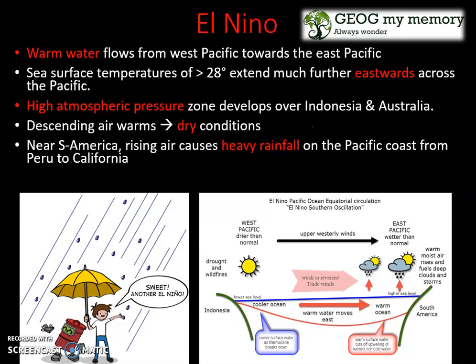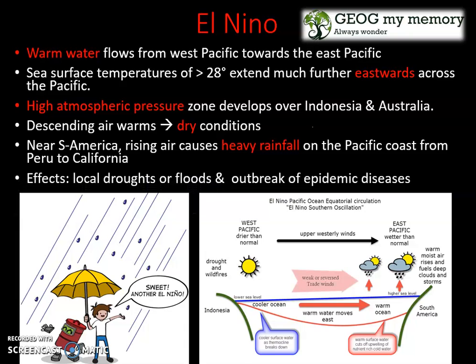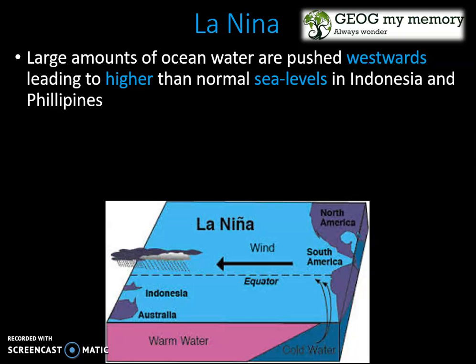From Peru to California, the effects of El Niño include local droughts or floods and an outbreak of epidemic diseases. Now let's look at La Niña. Large amounts of ocean water are pushed westwards, leading to higher than normal sea